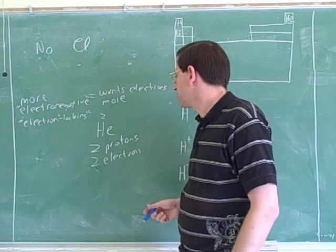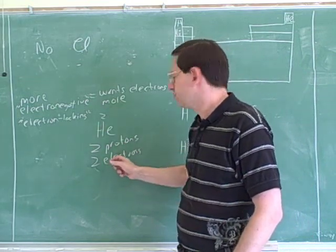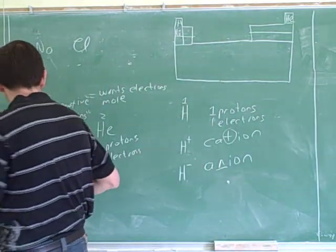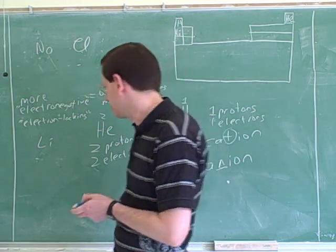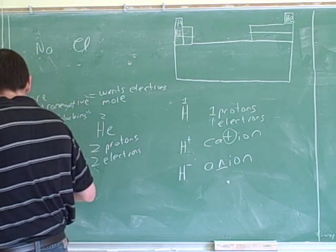We can always tell how many protons something has from the atomic number. And then we would know how many electrons it would have if it were neutral, because that would be the same number. So by the same token, how many protons does lithium have? Three. So if it's neutral, it has three electrons.